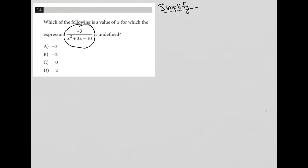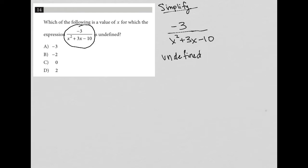This question asks: which of the following is a value of x for which the expression negative three over x squared plus three x minus ten is undefined? So how is it possible that a fraction is undefined? The first time you hear the term 'undefined' in school is when you divide by zero. It doesn't matter what's in the numerator — as soon as you have zero in the denominator, the answer is undefined.